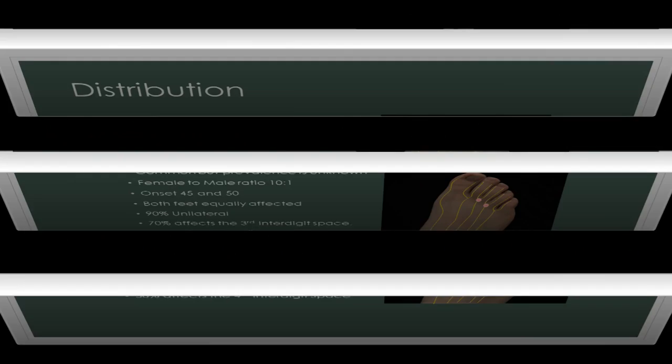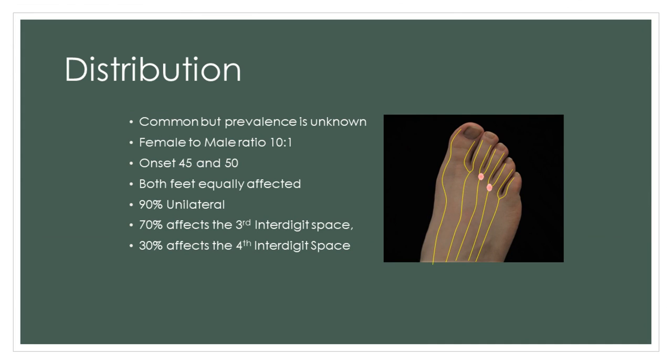In terms of its prevalence, this is really unknown, but it's fairly common, and there is a female to male ratio of 10 to 1. Onset is between the ages of 45 and 50, and both feet are equally affected. However, usually when it presents, over 90% it occurs unilaterally. In terms of the digital nerves which are affected, 70% affects the third interdigital nerve, and 30% affects the fourth interdigital nerve.